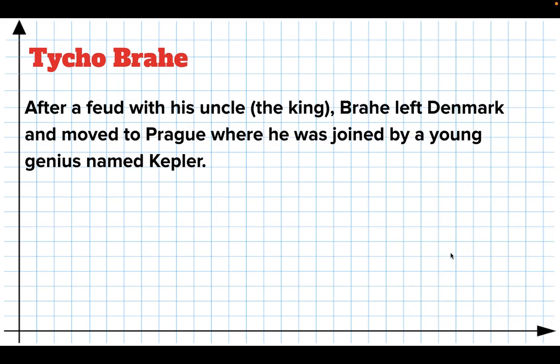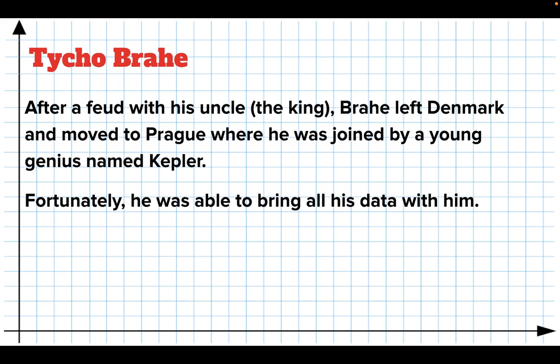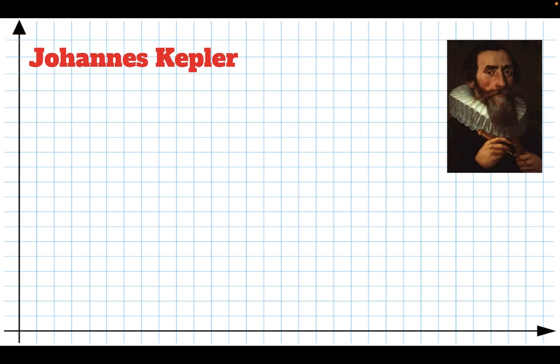He got in trouble later on with his uncle. They had a feud. He got kicked out of Denmark. He ended up traveling to Prague, where he was joined by a young guy by the name of Kepler. And the important thing in this story is that he brought all his data with him.